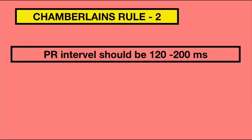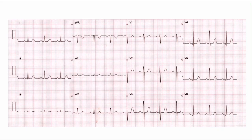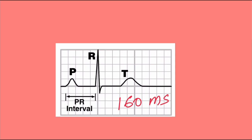Rule 2 states that the PR interval should be 120 to 200 ms, which corresponds to 3 to 5 small squares. In this ECG, we can see that the PR interval is 160 ms, that is 4 small squares.